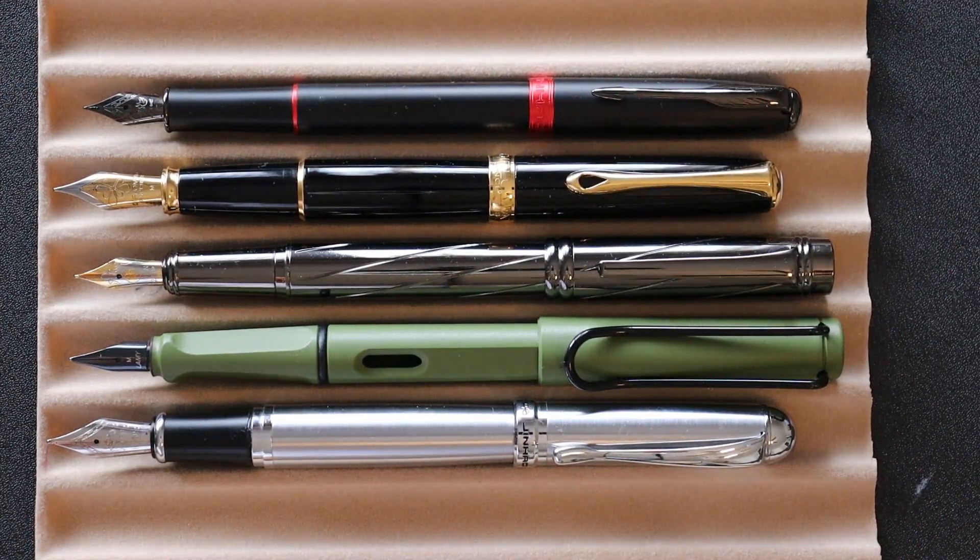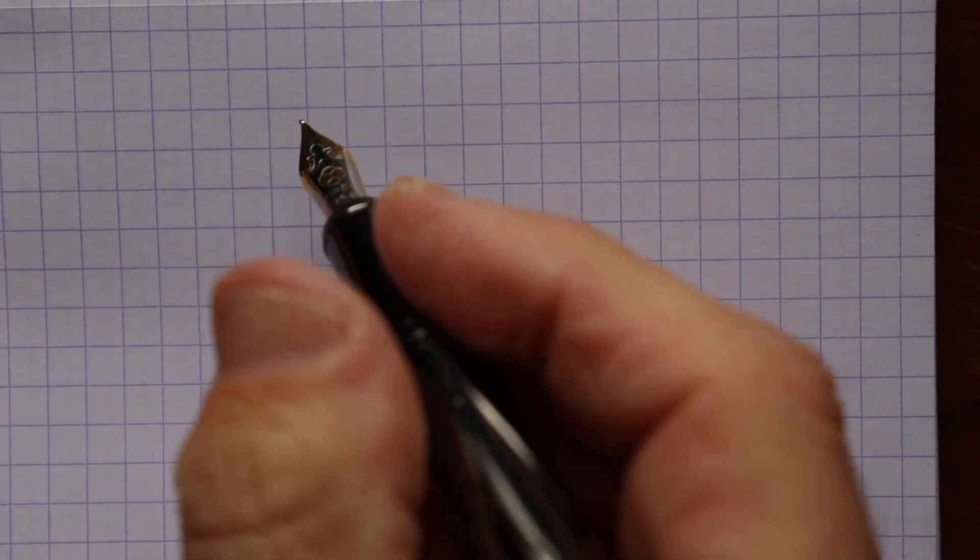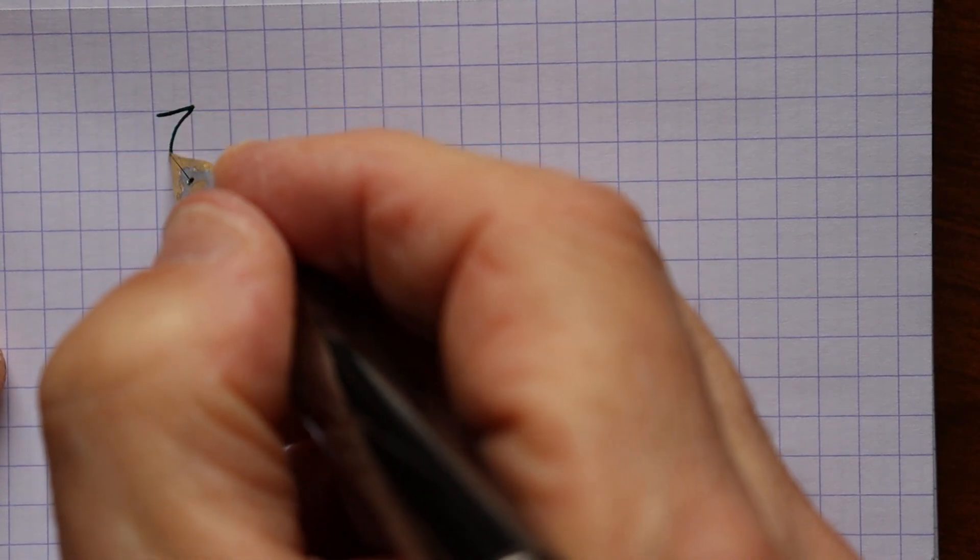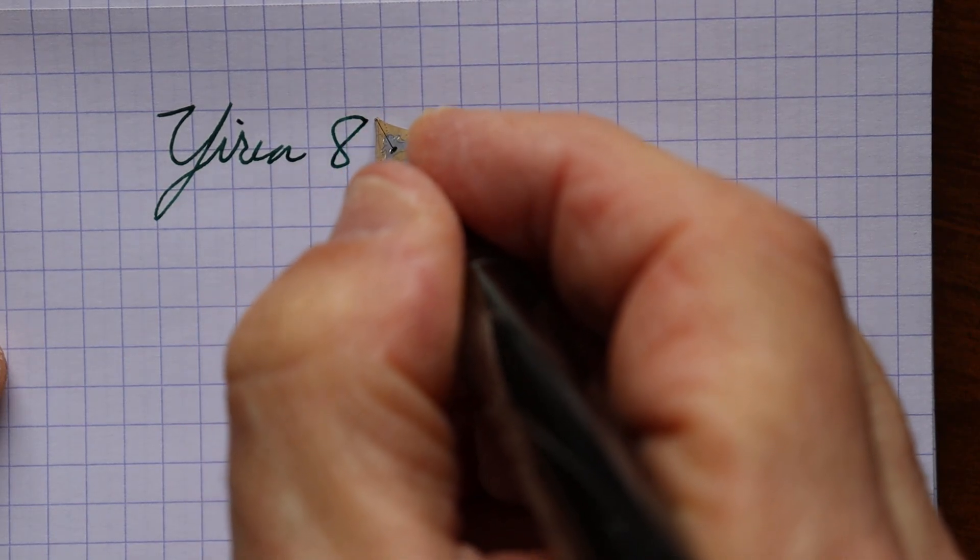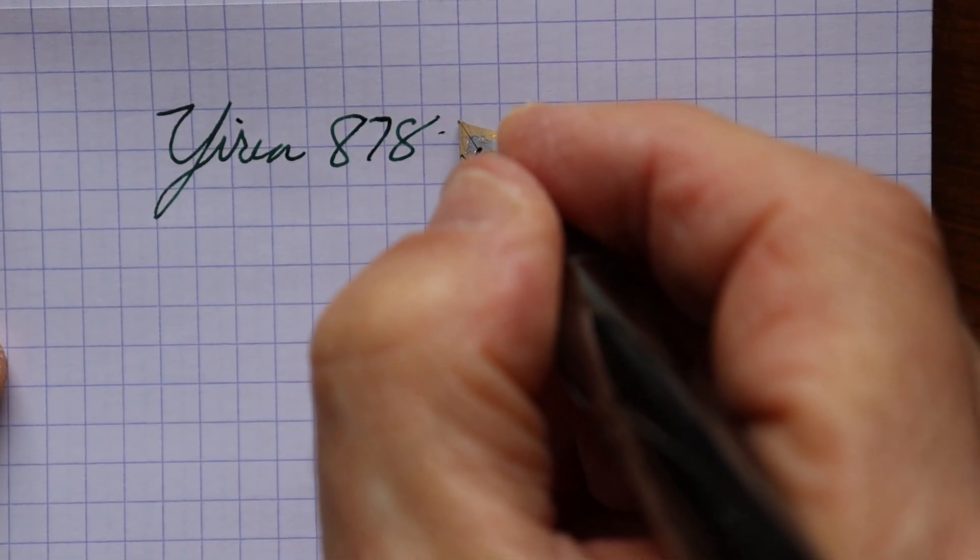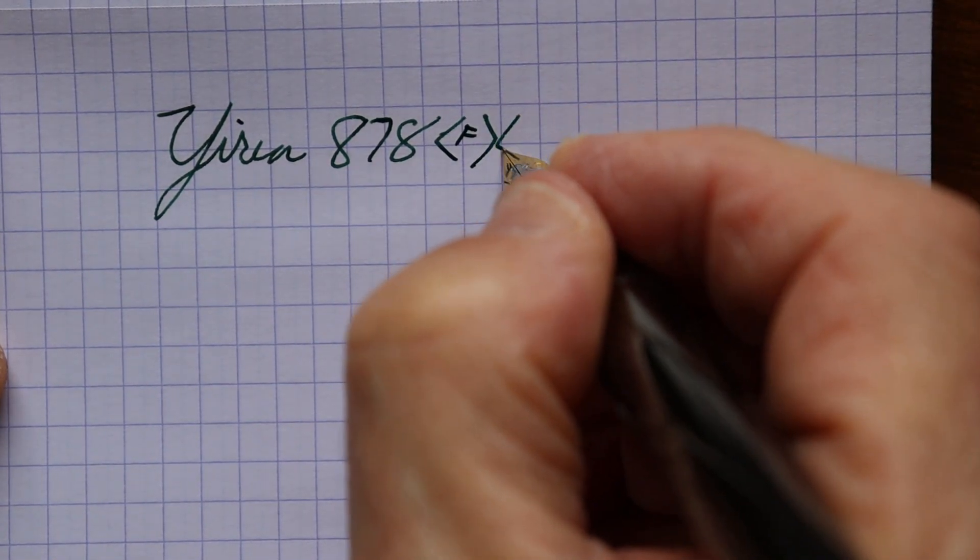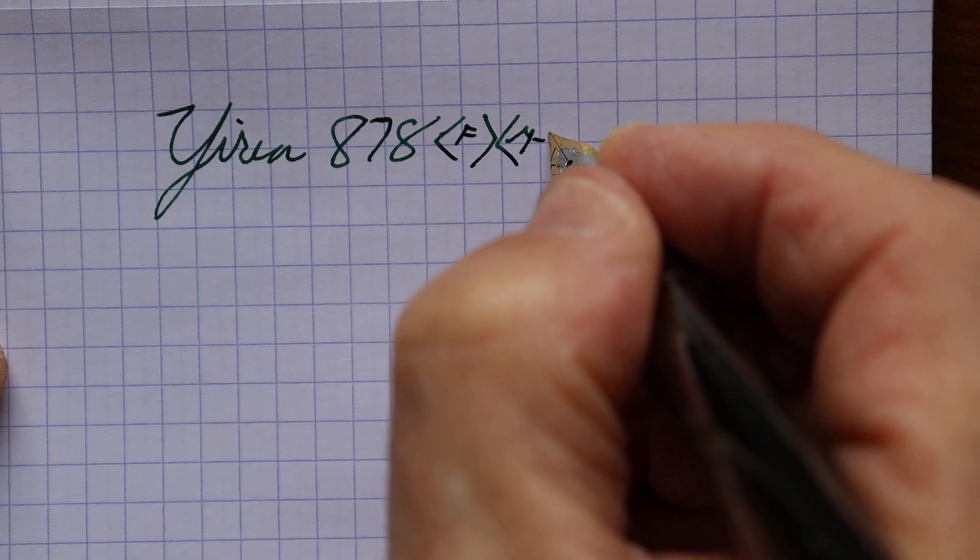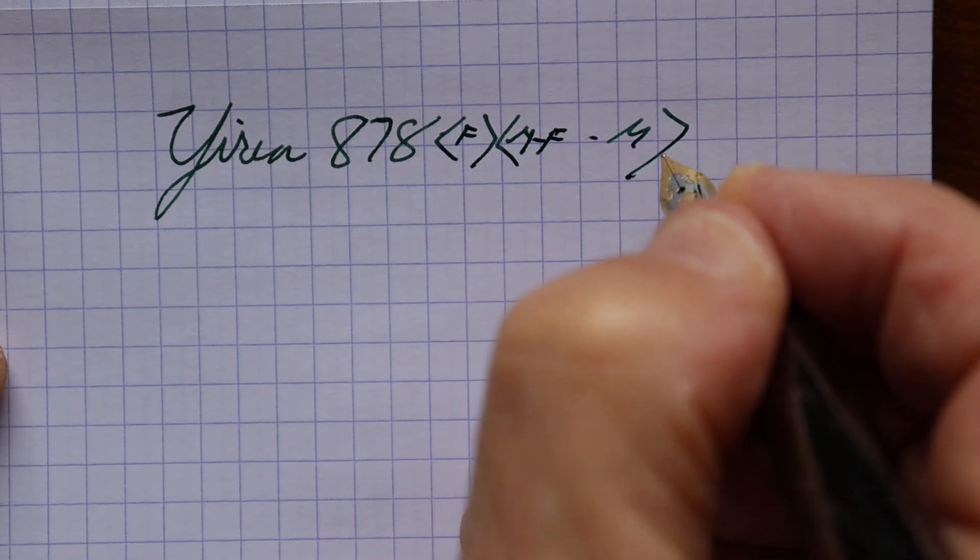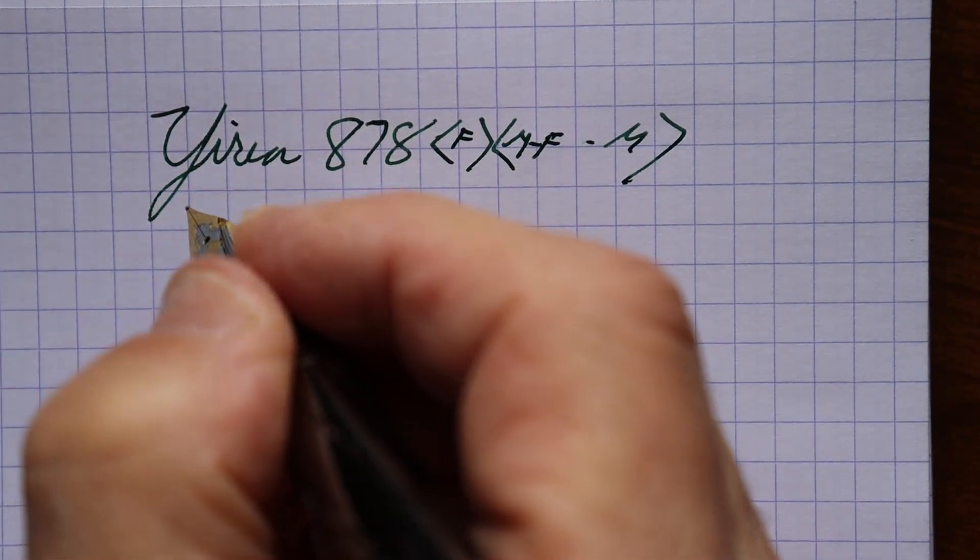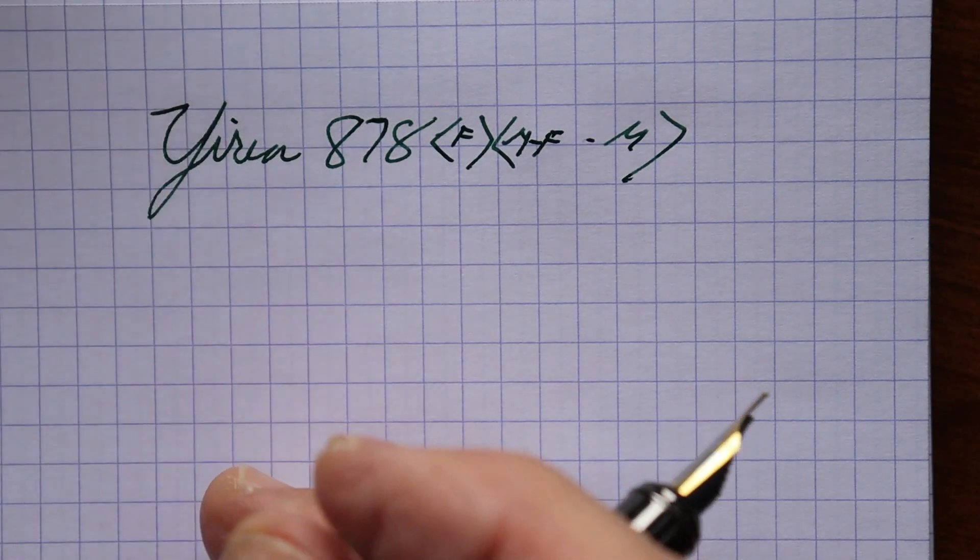All right, writing sample for the Yiren 878. And this is a fine nib, although it writes I would say medium fine to medium. The ink I am using is Diamine Sherwood Green.